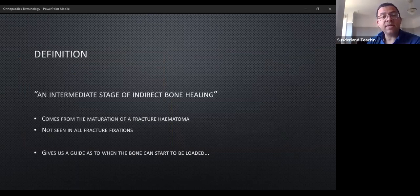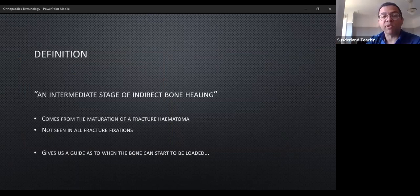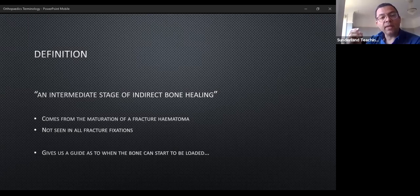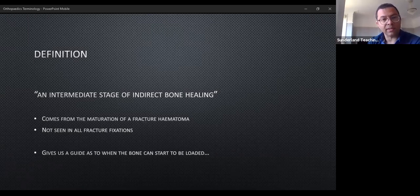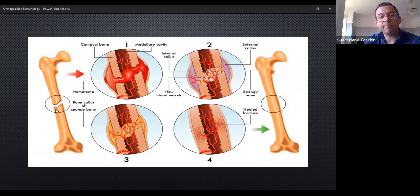The last term is callus — an intermediate stage of indirect bone healing. When you leave a bone to heal by itself — a wrist in plaster, letting mother nature do the work — that's indirect bone healing. An intermediate stage is when the fracture haematoma turns into very immature bone, which we call callus. When we can see callus on X-ray, we know the bone must be healing and we can start getting that bone working — we don't want to keep it too still, as bones lose density and joints get stiff.